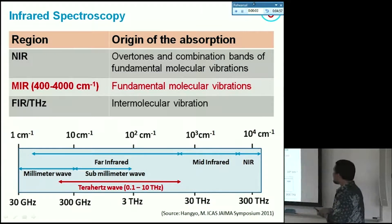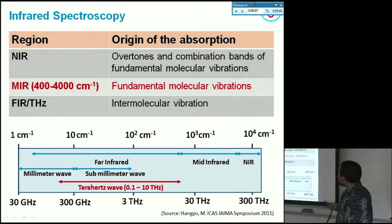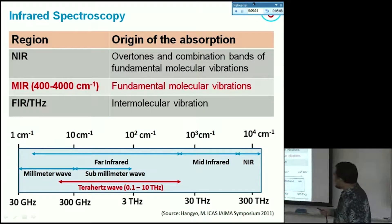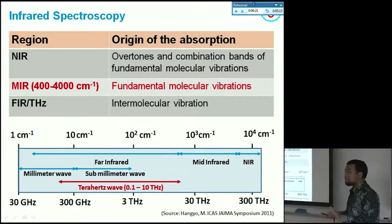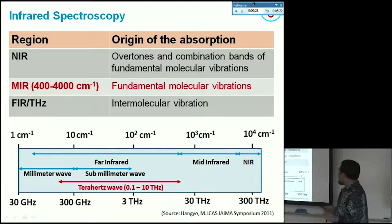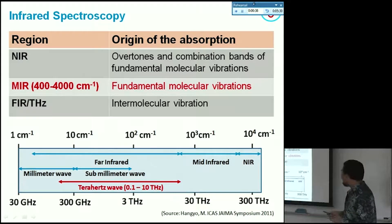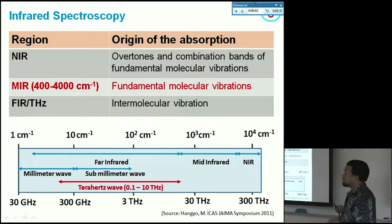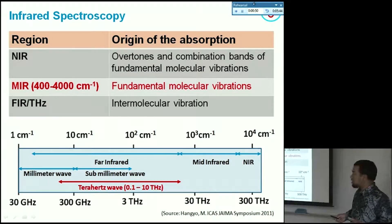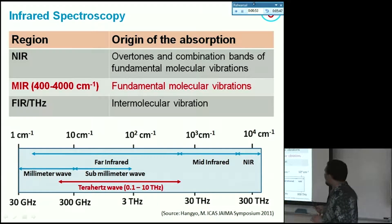As mentioned, the determination of vitamin C in the infrared region — including near-infrared, mid-infrared, and far-infrared or terahertz — has already been conducted. Each region has different mechanisms depending on the origin of absorption. In the present study, we focus on the use of mid-infrared spectroscopy from 400 to 4,000 cm⁻¹ wavenumber. Using this region, we can obtain the fundamental molecular vibration of vitamin C, and we may find very sharp peaks in the spectra compared to NIR or terahertz.